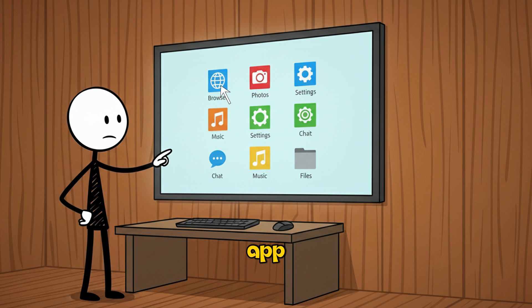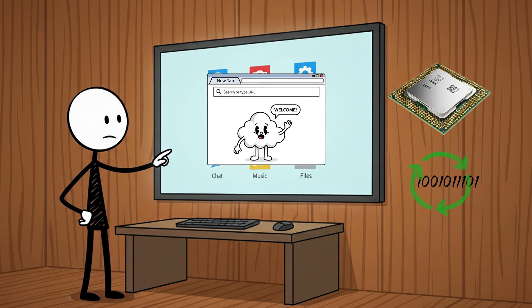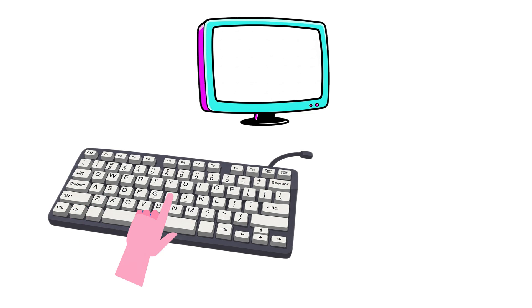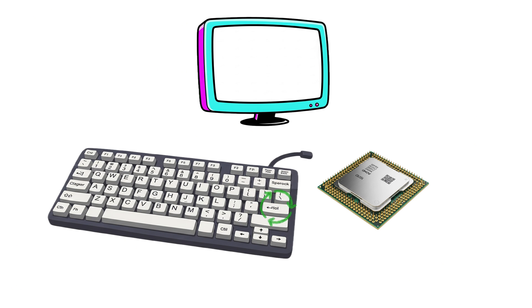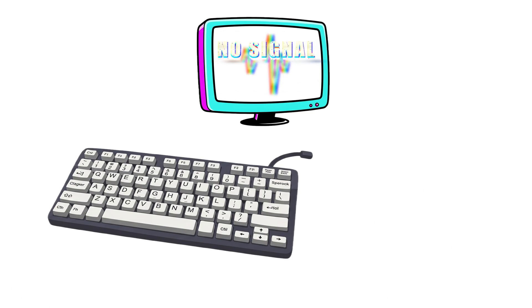For example, when you click on an app, it's the CPU that tells the system to open it. If you write something on the keyboard, the CPU processes that input and shows it on the screen. So without the CPU, the computer would not be able to think or act at all.